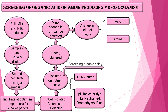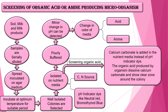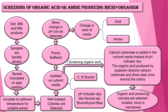There is one more method for screening of organic acid production. Instead of using a pH indicator dye, calcium carbonate is added to the nutrient medium. The organic acid produced by organisms dissolves the calcium carbonate and shows a clear zone around the colony. Organic acid-producing colonies are then selected, isolated, and a stock is maintained.